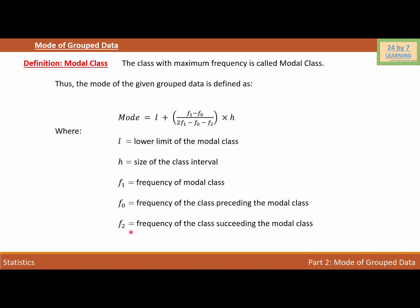In other words, if we want to find the mode of grouped data, what we need to do is first find the maximum frequency that we have on the given table, and that maximum frequency will tell us about the modal class. As soon as we get the modal class, the lower limit of the modal class is our L.